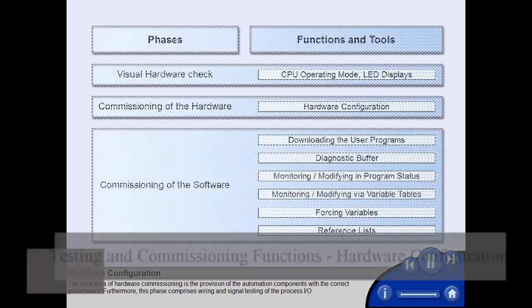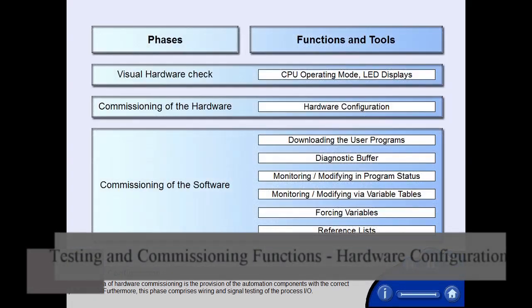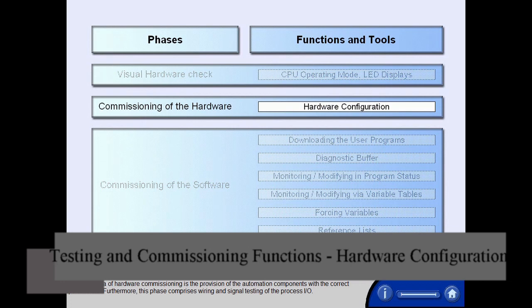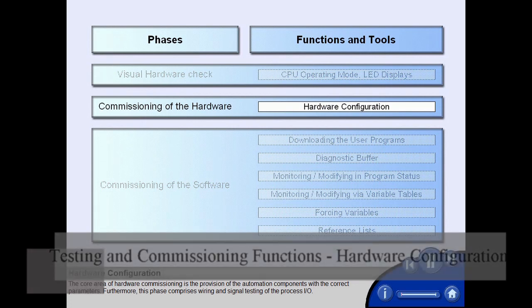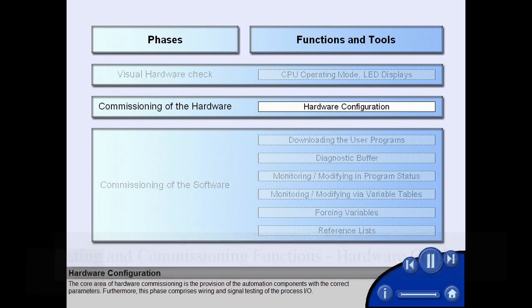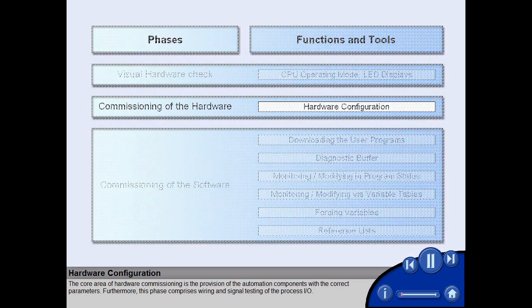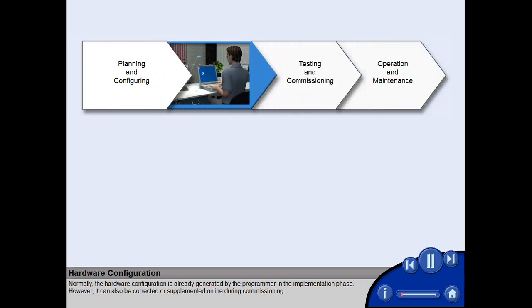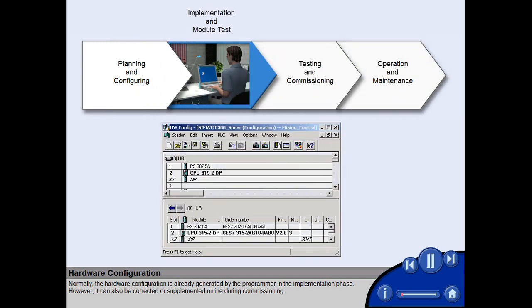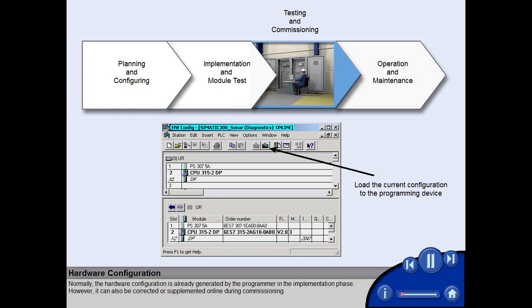The core area of hardware commissioning is the provision of the automation components with the correct parameters. Furthermore, this phase comprises wiring and signal testing of the process I/O. Normally, the hardware configuration is already generated by the programmer in the implementation phase. However, it can also be corrected or supplemented online during commissioning.